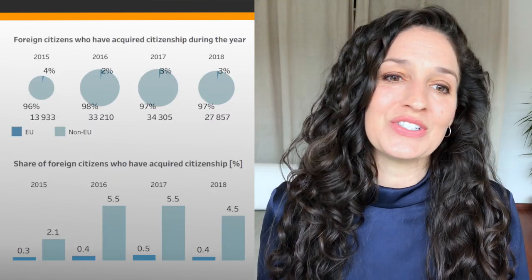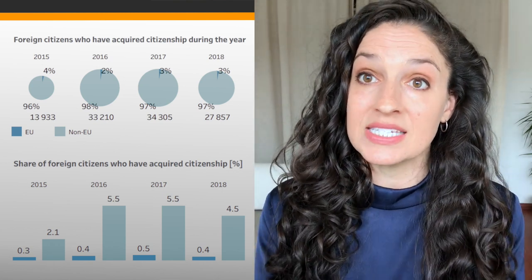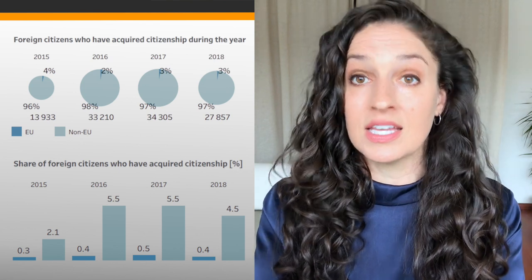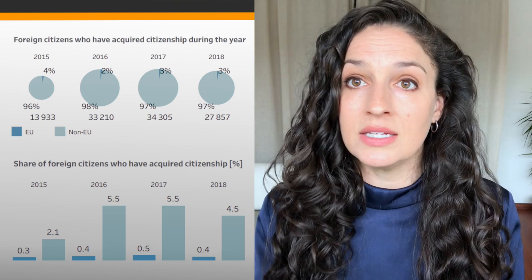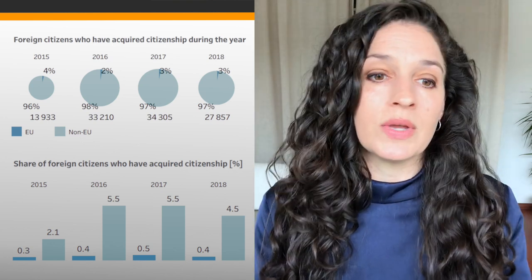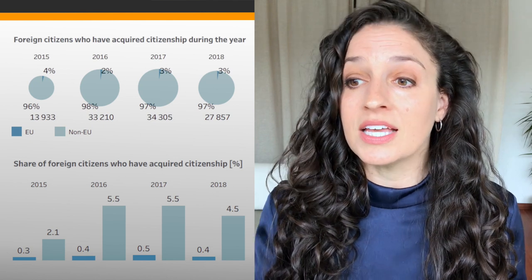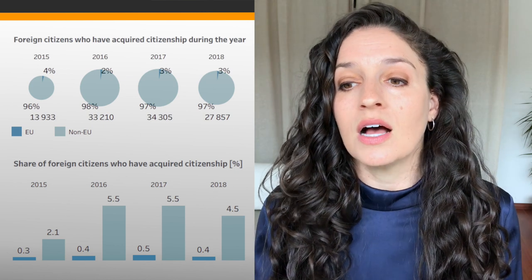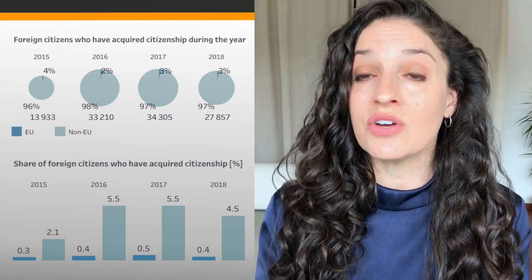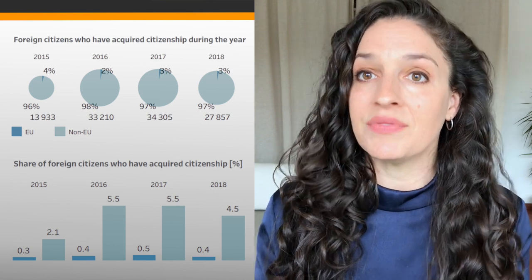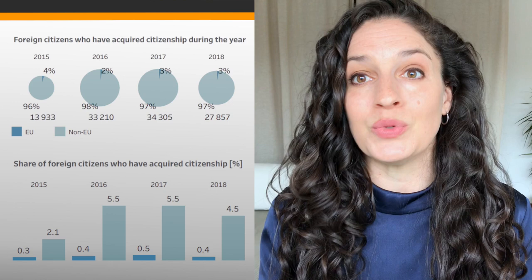Now let's turn to citizenship and naturalization — meaning people acquiring citizenship of the country in which they reside, in this case Greece. Looking at the differences between EU and non-EU nationals between 2015 and 2018, it's mainly non-EU nationals who are acquiring citizenship. The numbers and proportions are not large, and this makes sense because European citizens already have many of the same rights as Greek nationals, so it's more beneficial for people from outside the EU to gain citizenship.